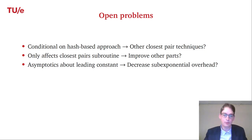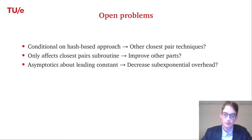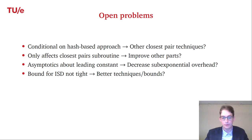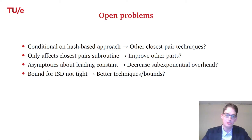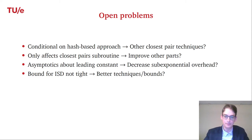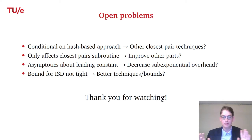One might decrease the sub-exponential overhead using the same or different methods, and since we care about concrete parameters in cryptography, not just asymptotics, this is worth investigating. For information set decoding, the lower bound is not tight, so either better upper bounds exist or a better lower bound matching the current techniques remains an open problem. Thank you for watching.